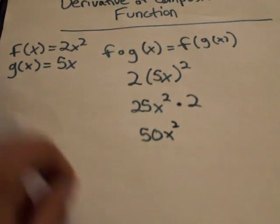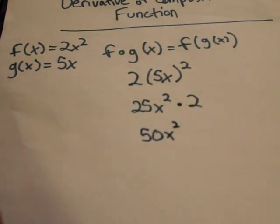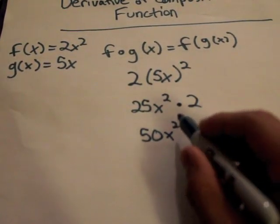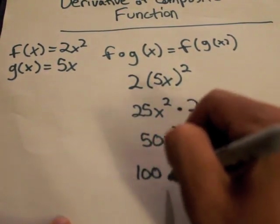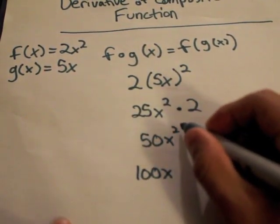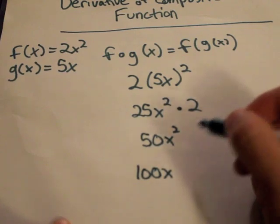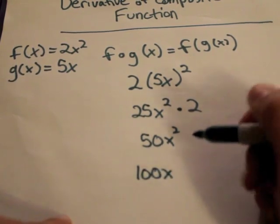And then from that point on, you can take the derivative using the power rule since you've simplified. So 2 times 50 would be 100 multiplied by x. And then if you subtract 1 from the original exponent, 2 minus 1 is 1. 100x to the 1 is the same as 100x.